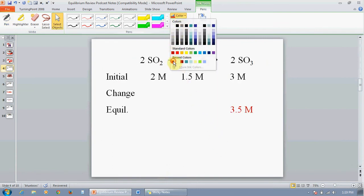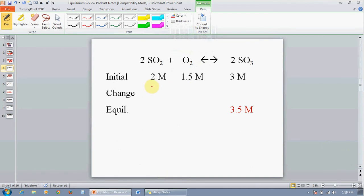The next level of problem is when you are given initial concentrations and an equilibrium amount of one of them. You can see that you went from 3 to 3.5, so you gained 0.5 molar here. Stoichiometrically, that means you lost 0.5 molar here, and you lost half that amount, 0.25 molar here.